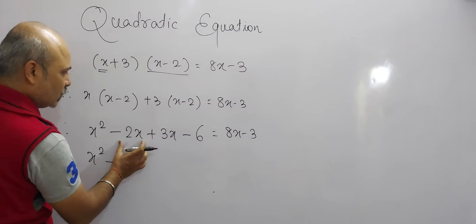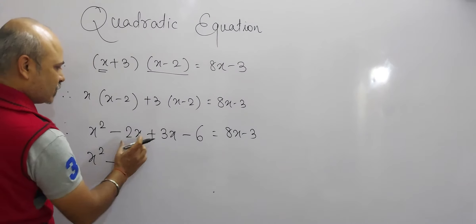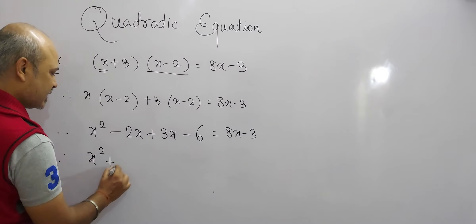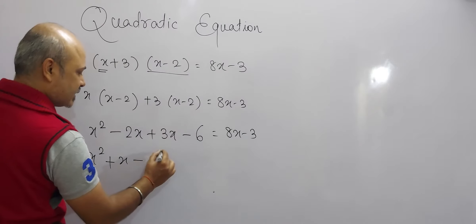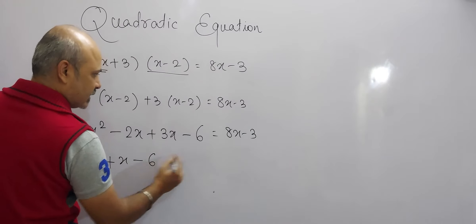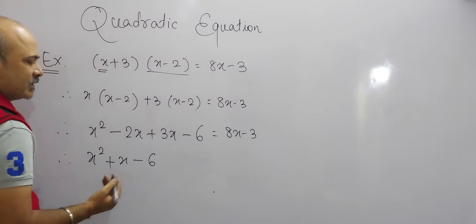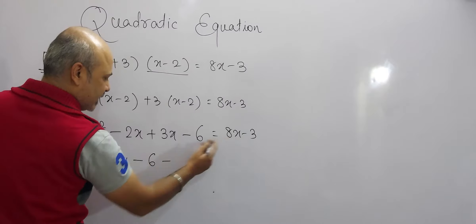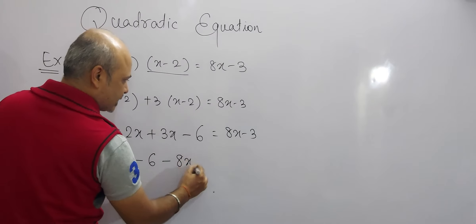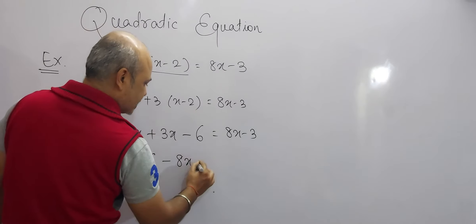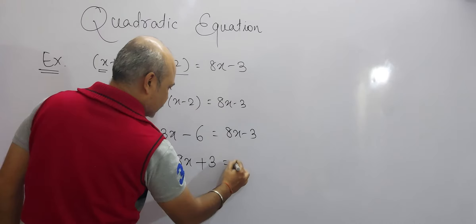So combining: minus 2x plus 3x is plus x, minus 6. Now we will transfer the right-hand side values to the left-hand side, so plus x becomes minus 8x, minus 3 becomes plus 3, and this is equal to 0.